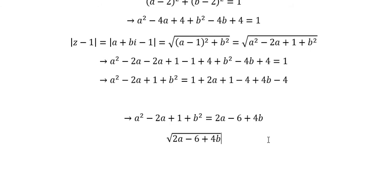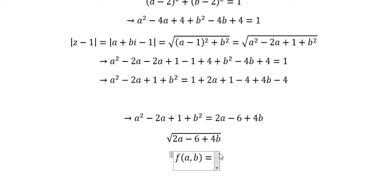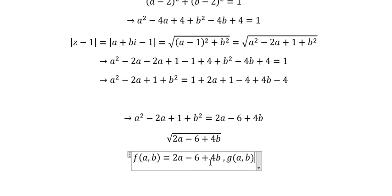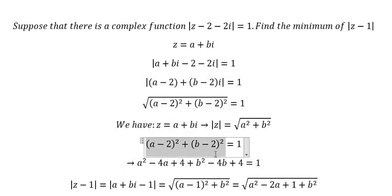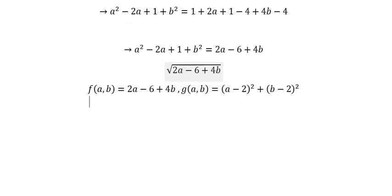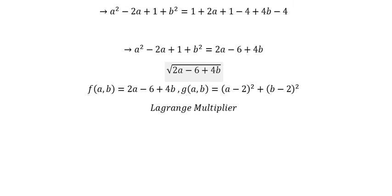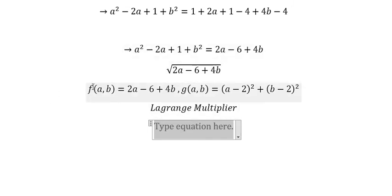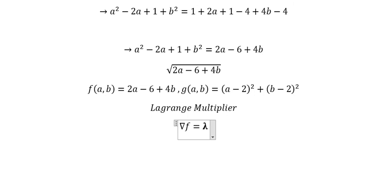Now we can set up the functions: f(a, b) equals the expression for |z-1| squared, and g(a, b) equals the constraint expression. We use the Lagrange multiplier method, setting the gradient of f equal to lambda times the gradient of g.